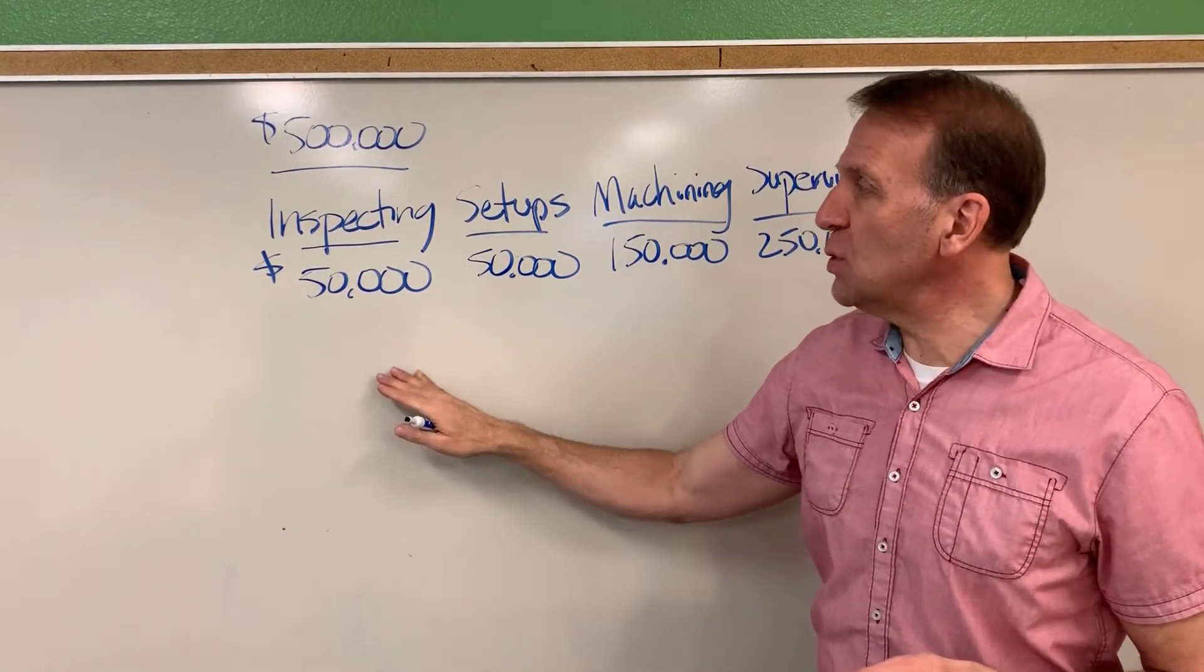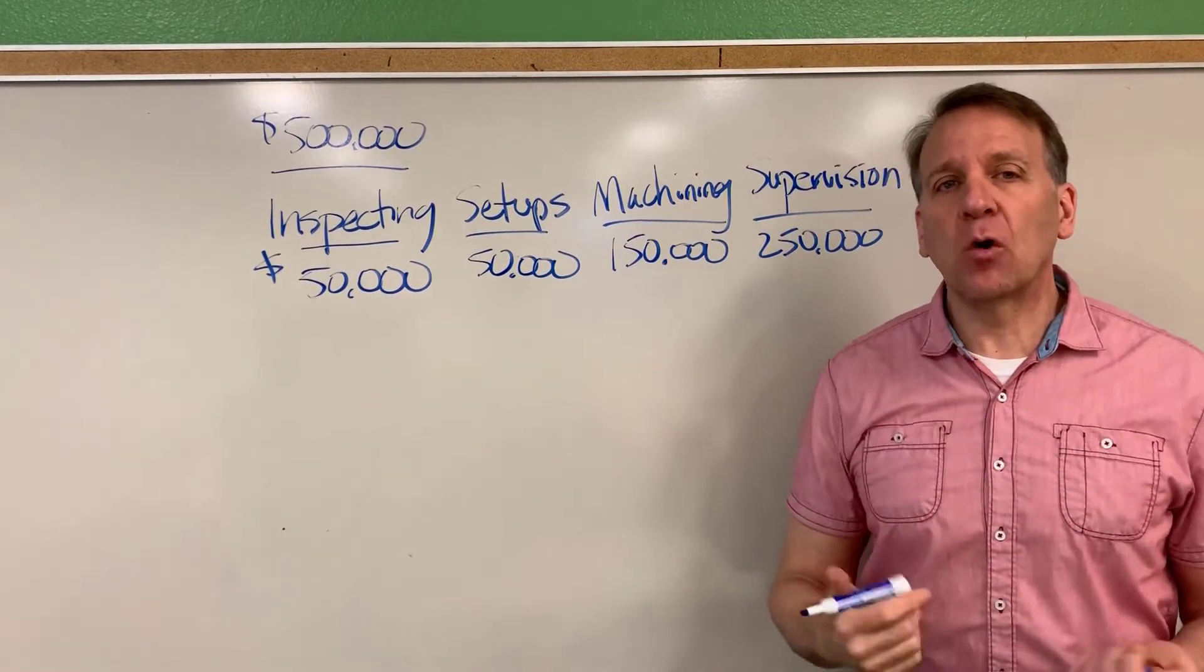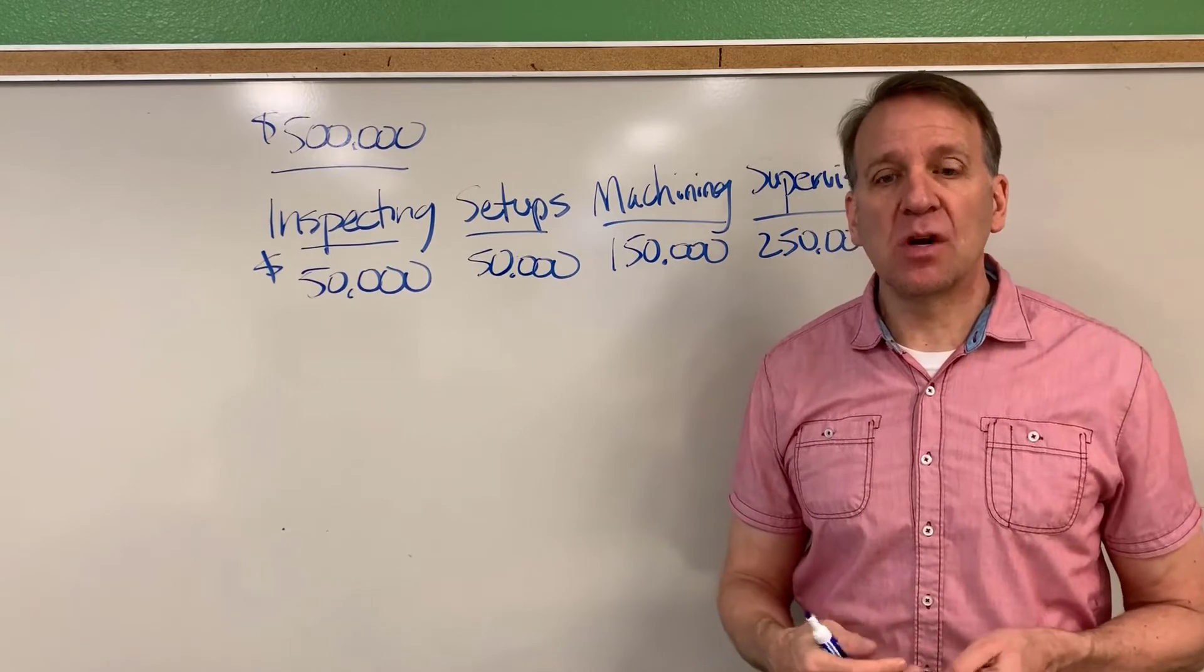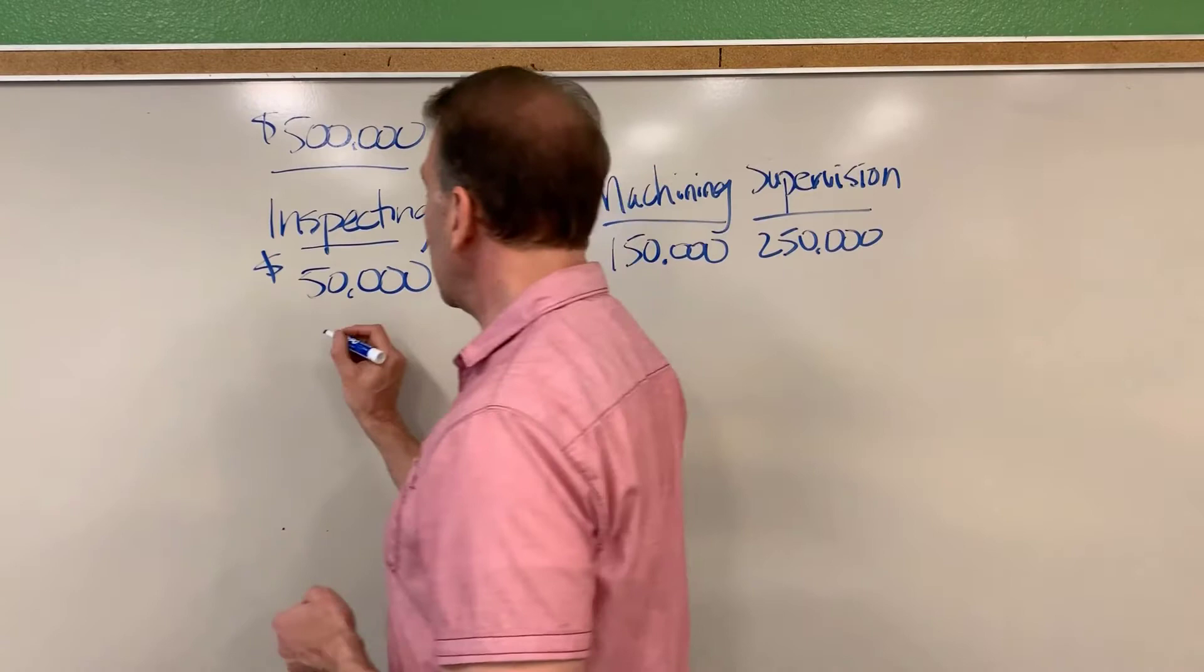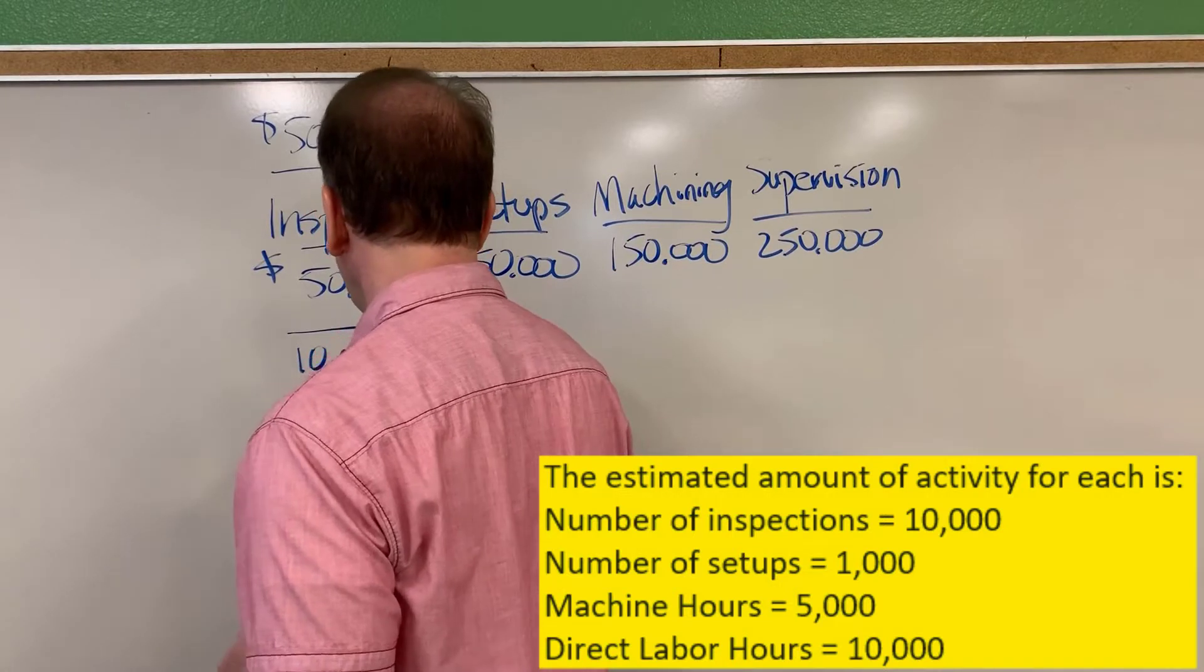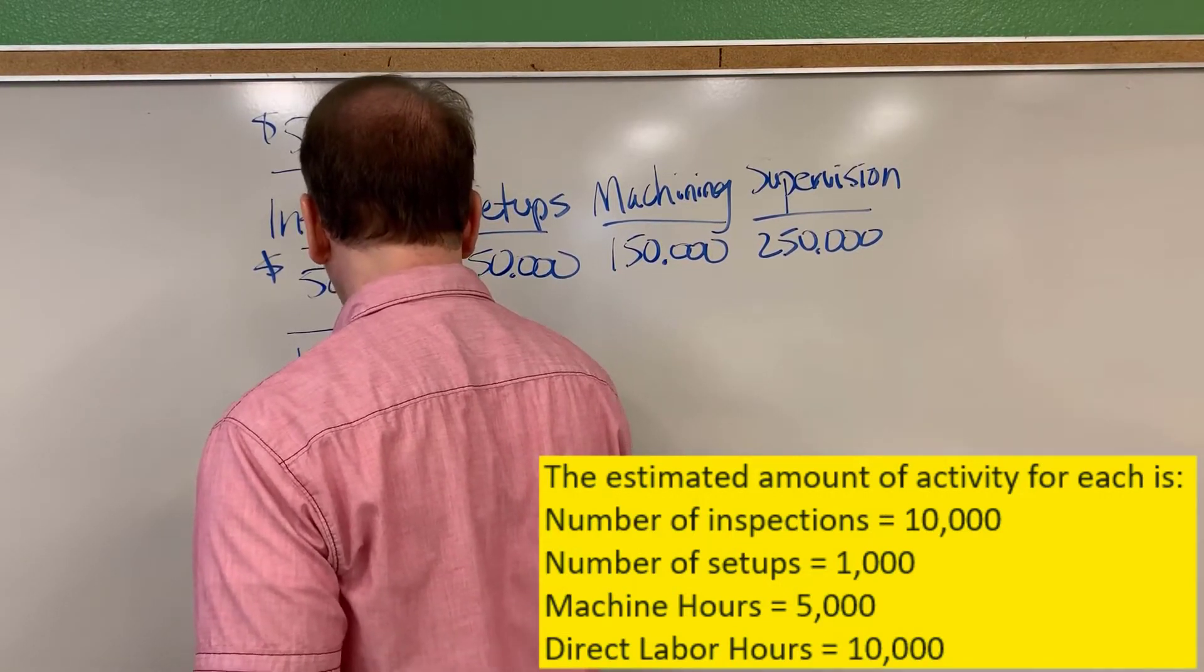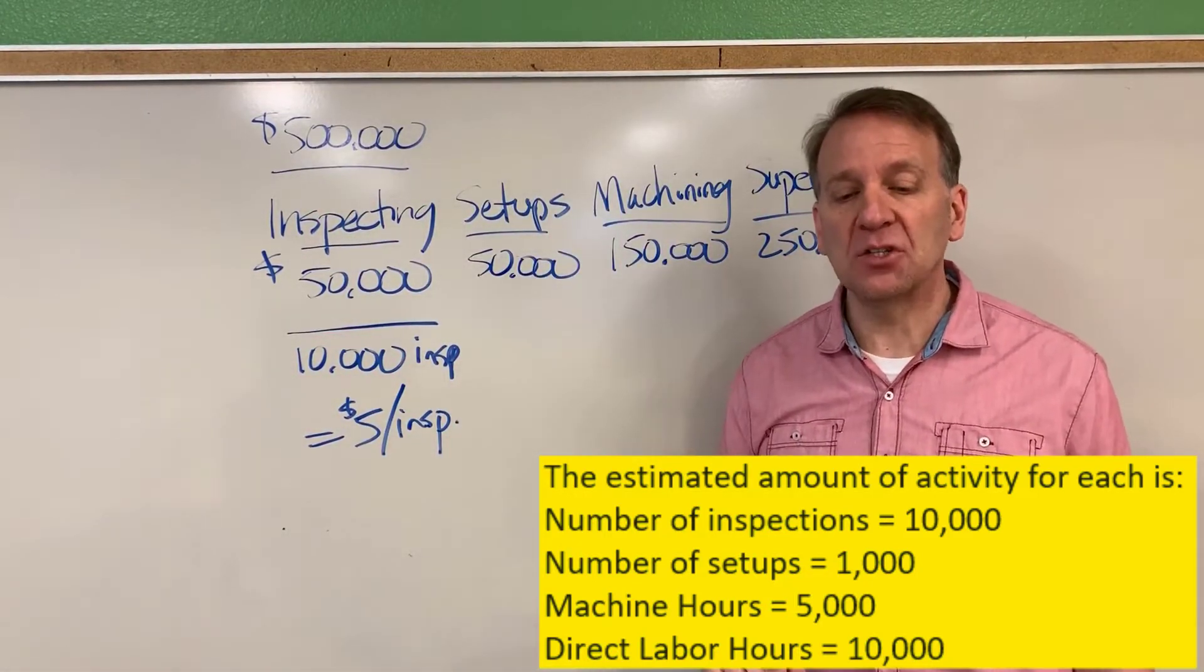Next, what we want to do is we want to divide this by an activity. So we're using the same formula as before. We're taking the overhead costs divided by some sort of activity. For inspections, the activity is number of inspections. So I'm going to divide this by 10,000 inspections, which gets me $5 per inspection. So there's my rate for inspections.